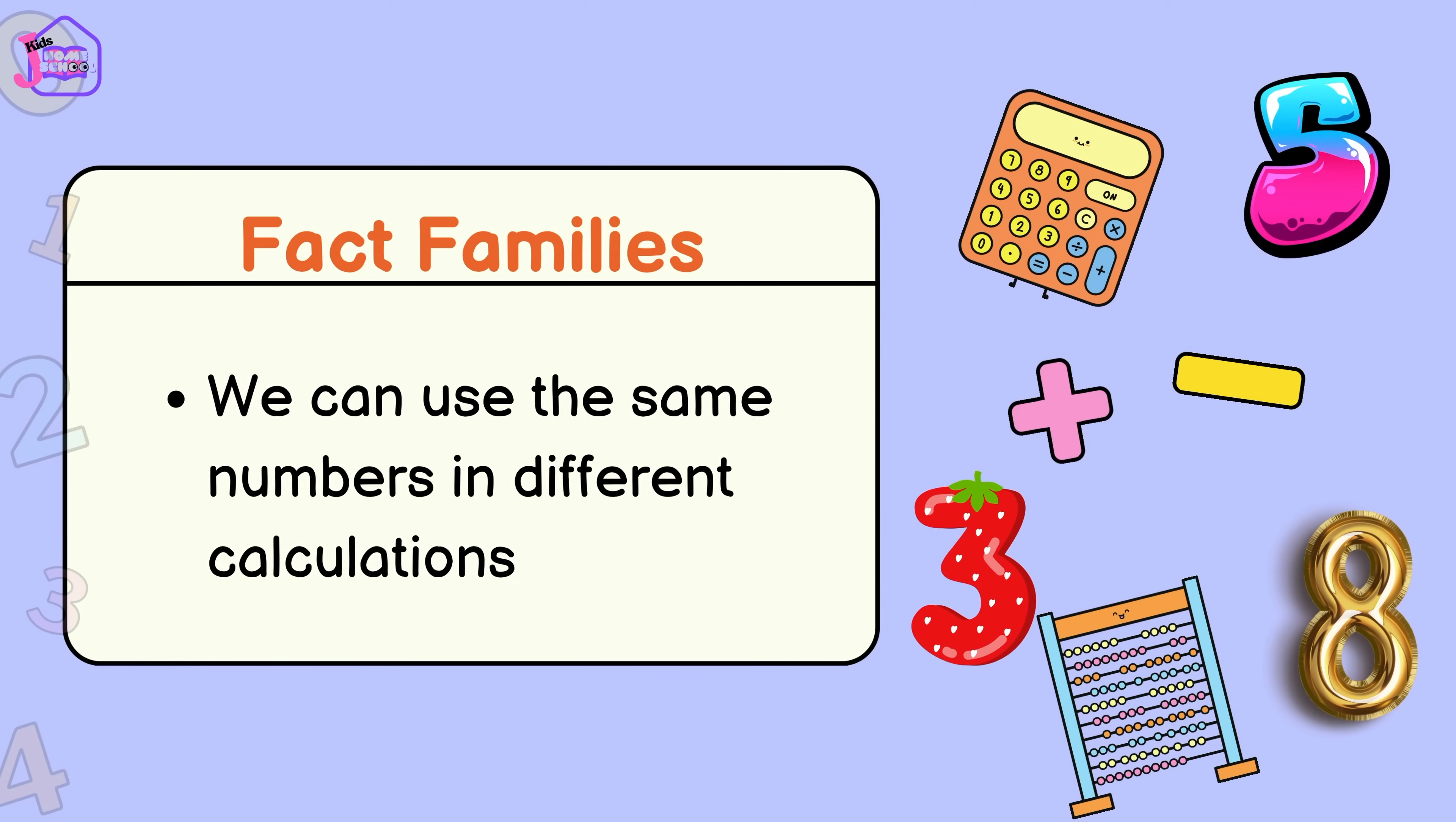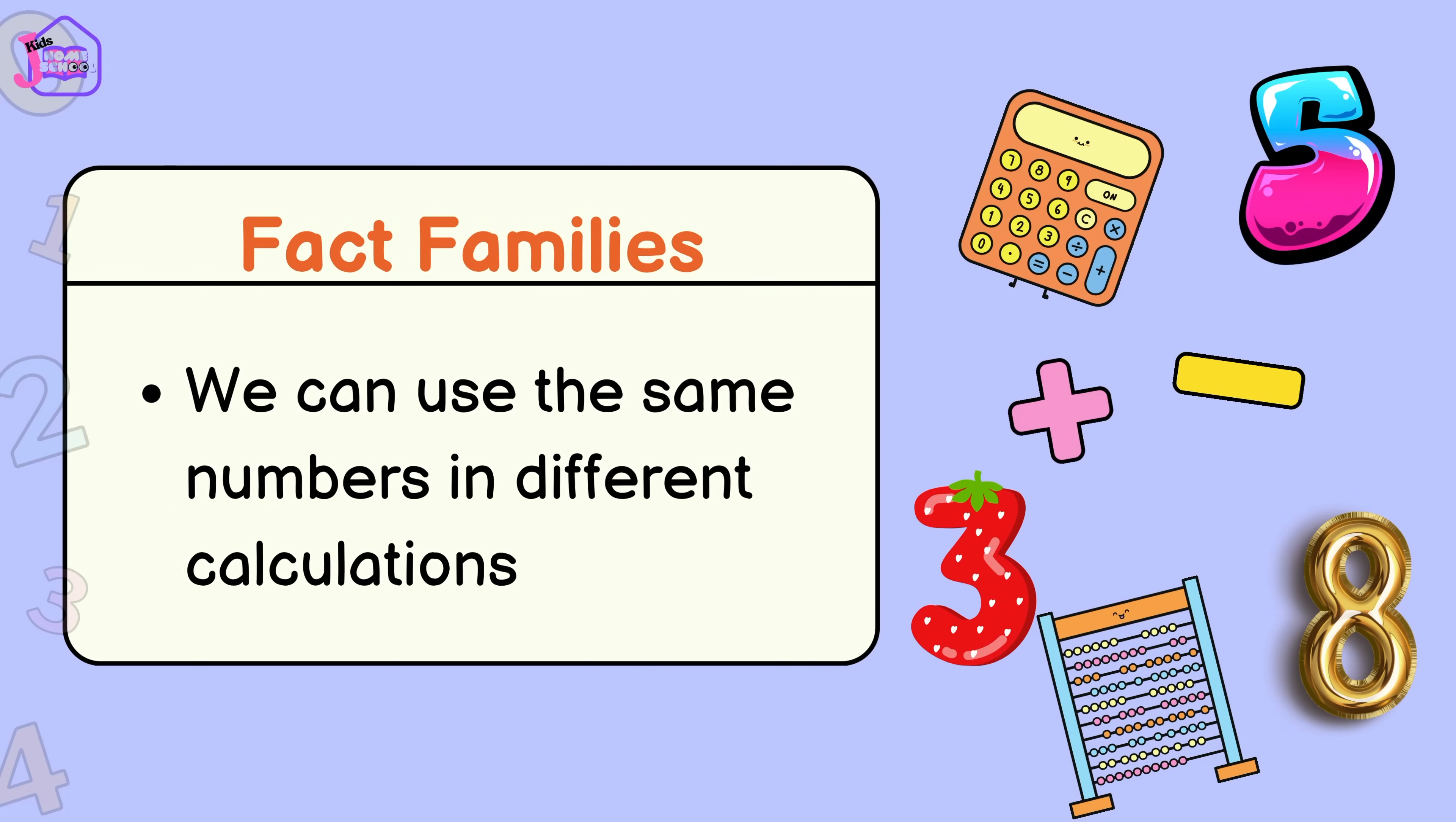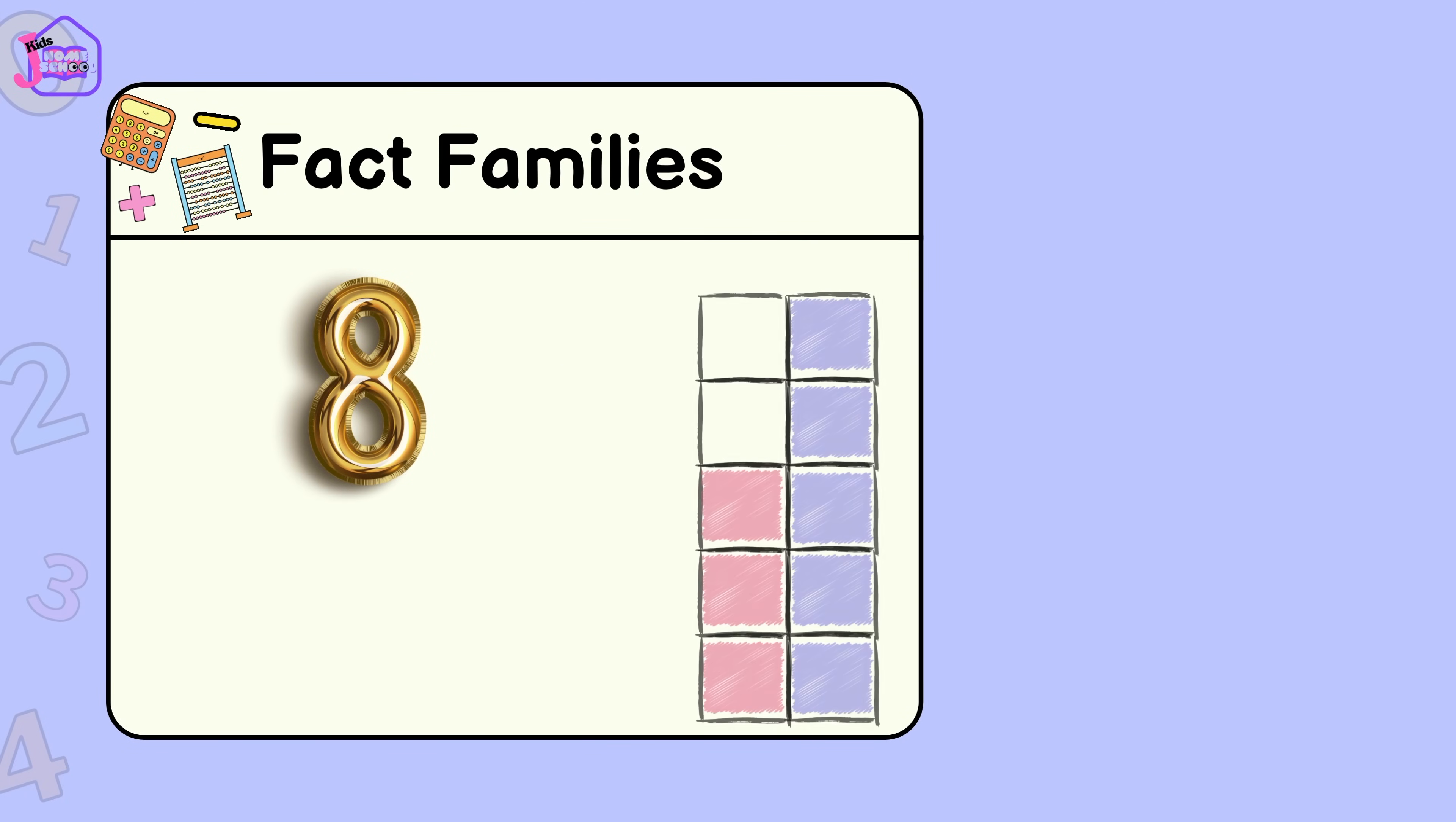We can use the same numbers in different calculations. This is number 8, but guess what? 8 can be made by adding two smaller numbers together. Let's find out which ones.